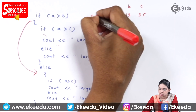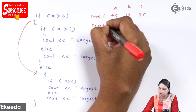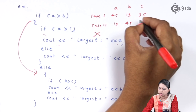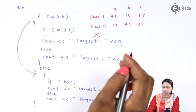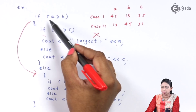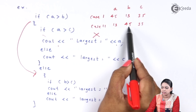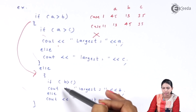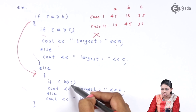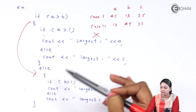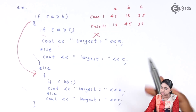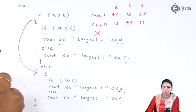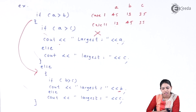Now for case 2, suppose A is 13, B is 45, and C is 35. I check between A and B — A is 13 and B is 45, so B is greater. Since B is greater, I skip the inner if block and jump directly to the else part, checking if B is greater than C. B is 45, which is greater than C (35), so I get the answer: largest is B. This is how we check using nested if-else.